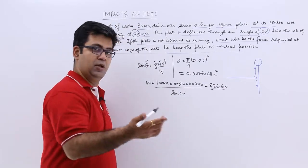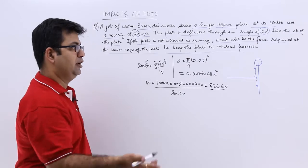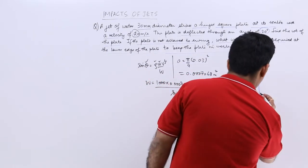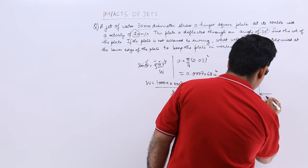When it is swinging, you have a deflection of 20 degrees. Now we don't want it to swing, so I have to put a horizontal force like this, p.